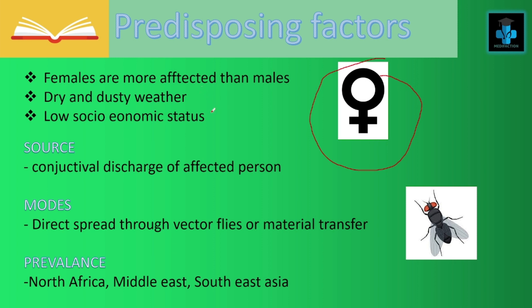Source: The main source for trachoma is the conjunctival discharge of an affected person. Mode of spread: The more common cause of spread is direct spread, which is through vector flies or even through material transfer. Prevalence: Trachoma is more common in North Africa, the Middle East, and Southeast Asia.